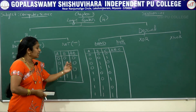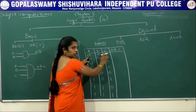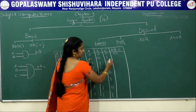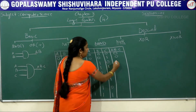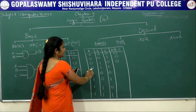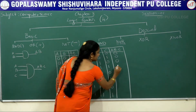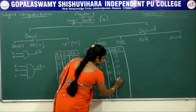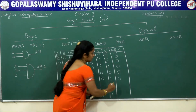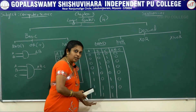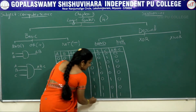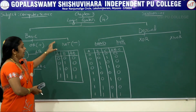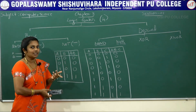In AND operation, when all the inputs are 1 then only the output becomes 1, otherwise it becomes 0. For example: 0×0×0=0, 0×0×1=0, and so on — any combination with at least one 0 gives output 0. Only when all three inputs are 1 does the output become 1. This confirms that in AND operation, if all the inputs are 1 then only the output is 1, otherwise it is 0.